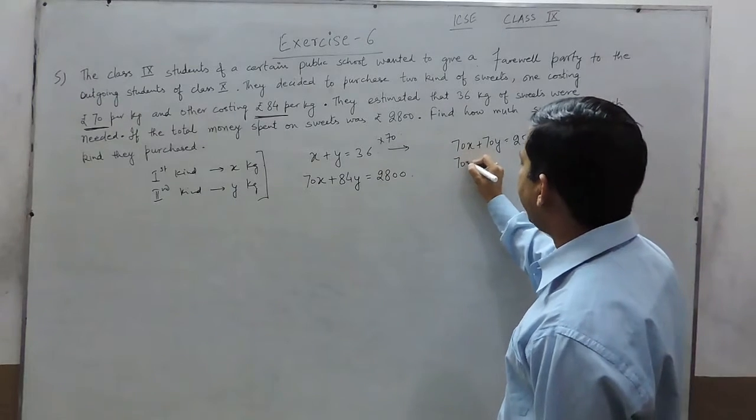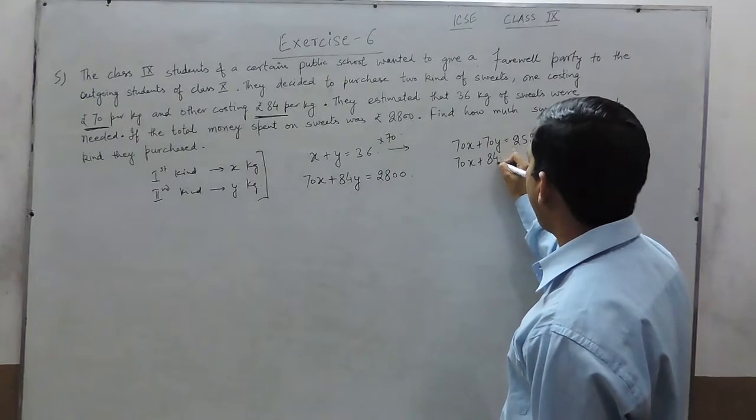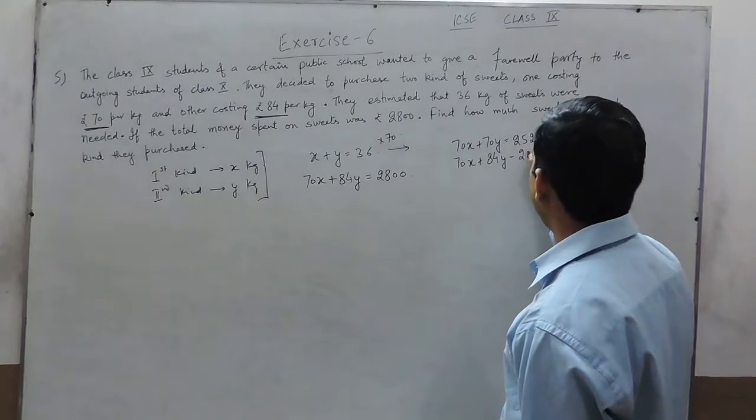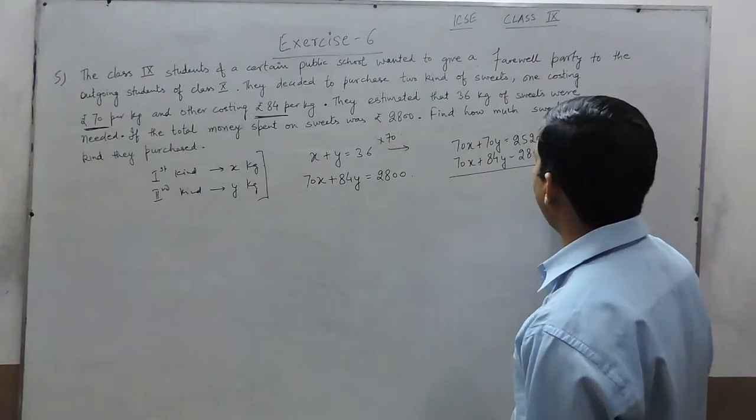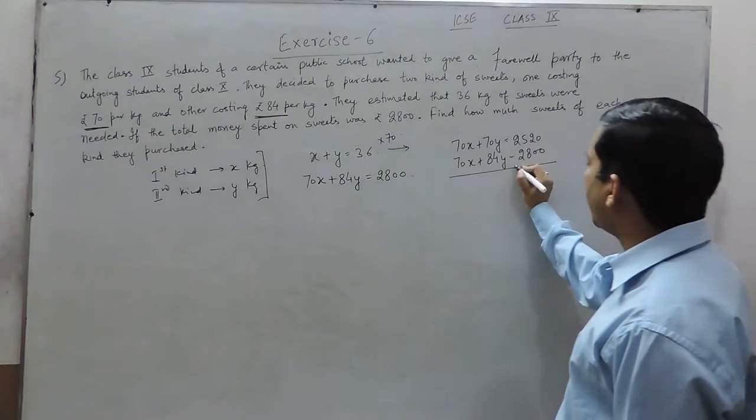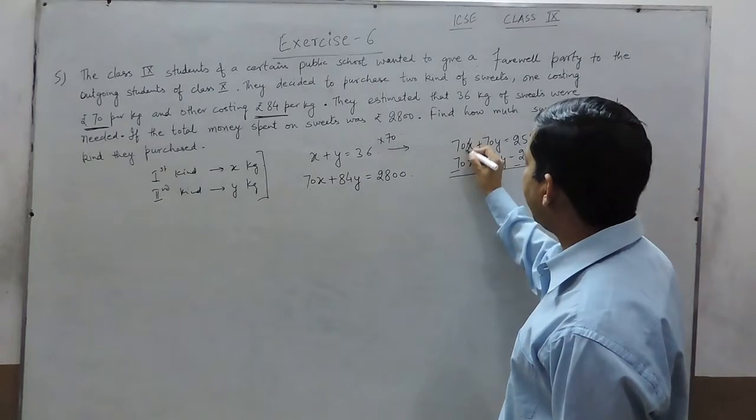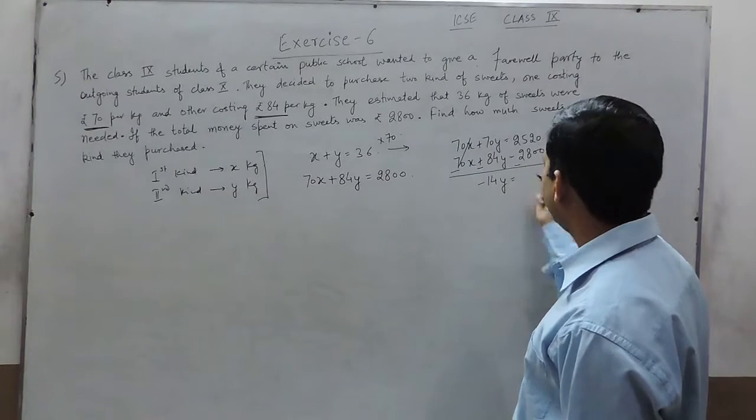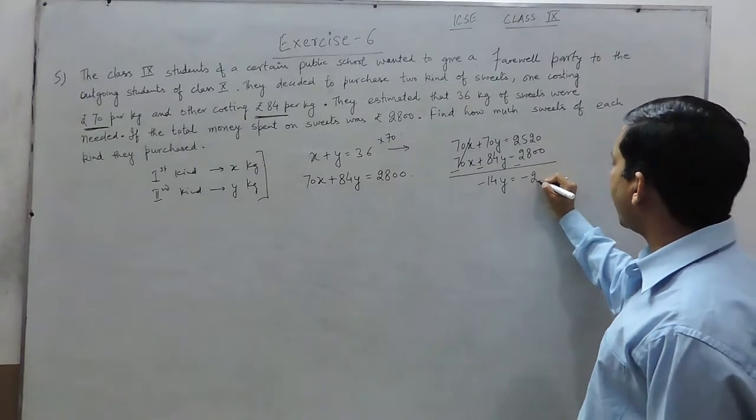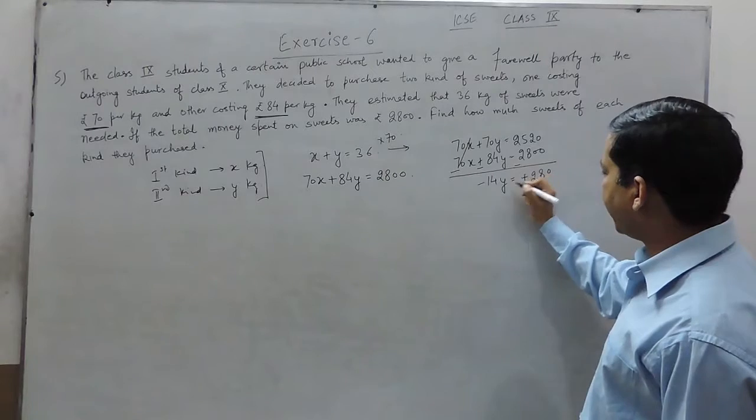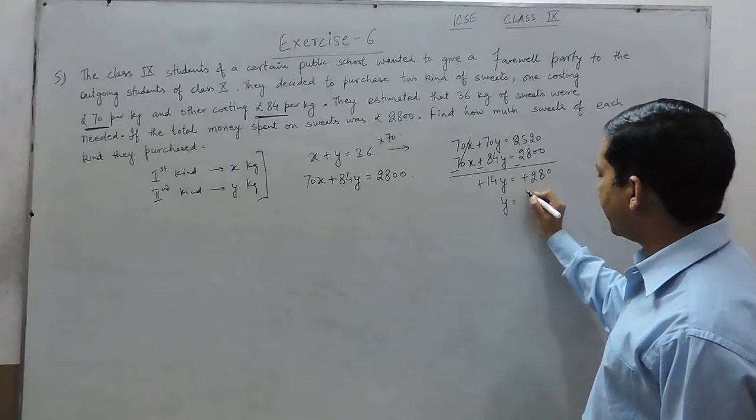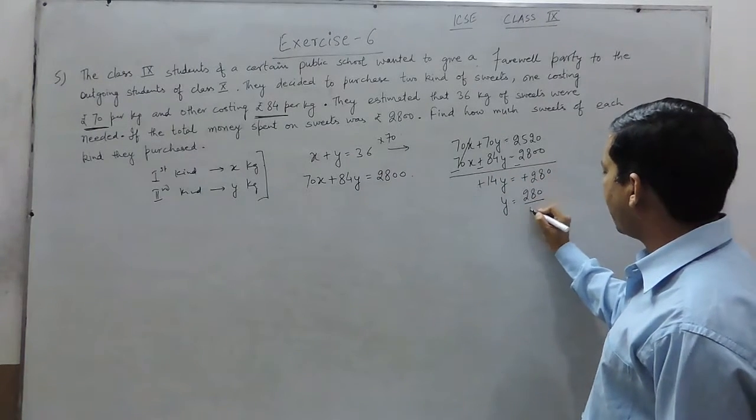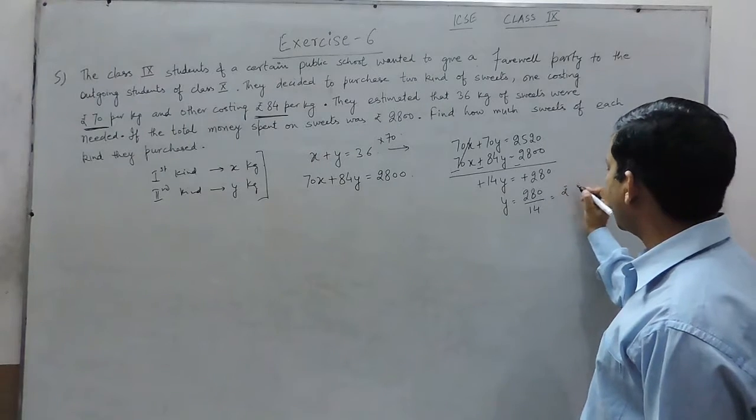The second equation is 70x plus 84y equals 2800. This is already known. So, if we subtract the two equations, this can be cancelled out. So, it is minus 14y equals minus 280. If we calculate, we get the value of y as 280 upon 14 and that is going to be 20.